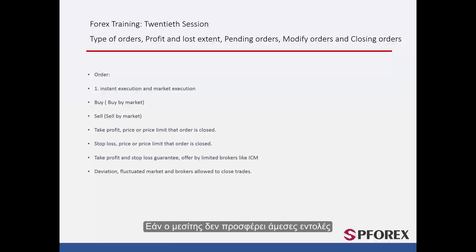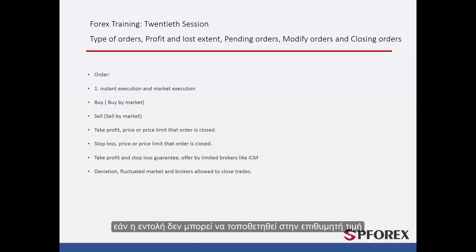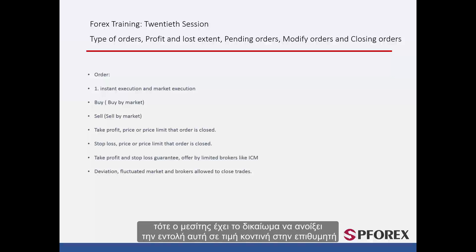If a broker does not provide instant orders but a trader asks to open an order at an exact price, and the order cannot be placed at the favoured price, the broker has authority to open that order at a price close to the desired price.